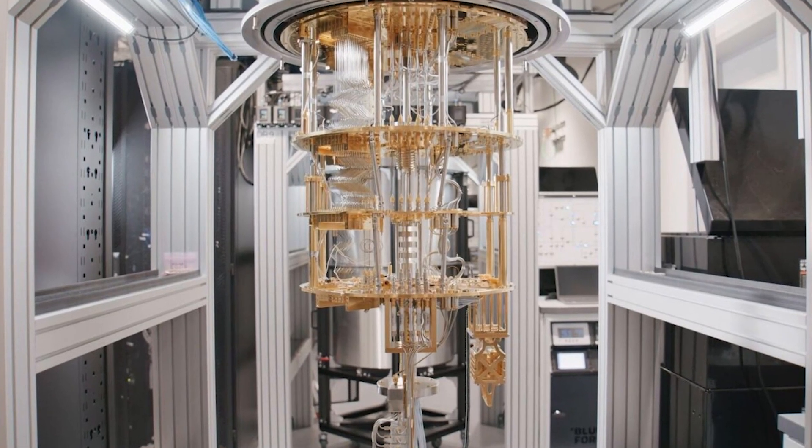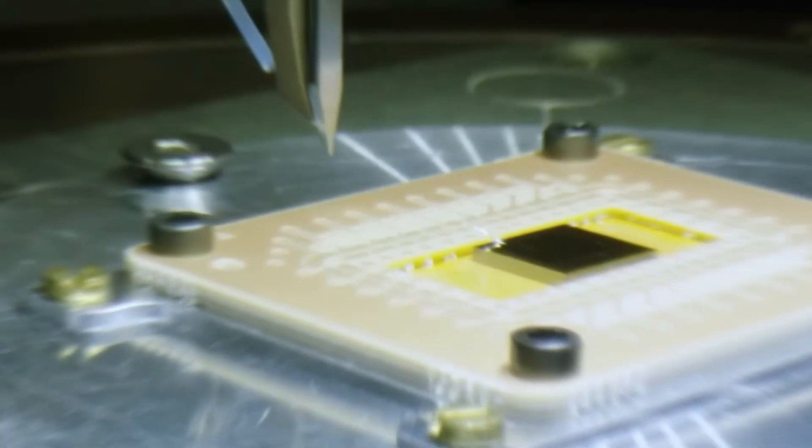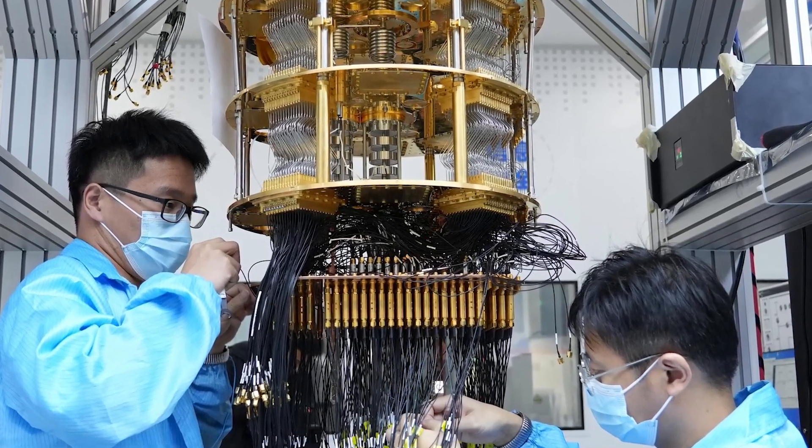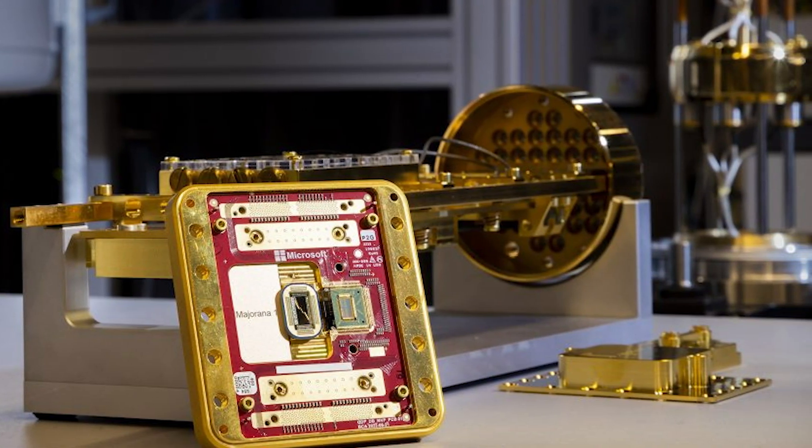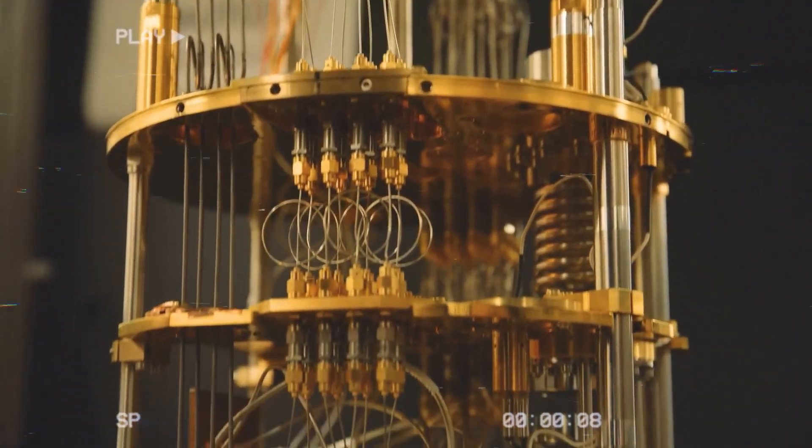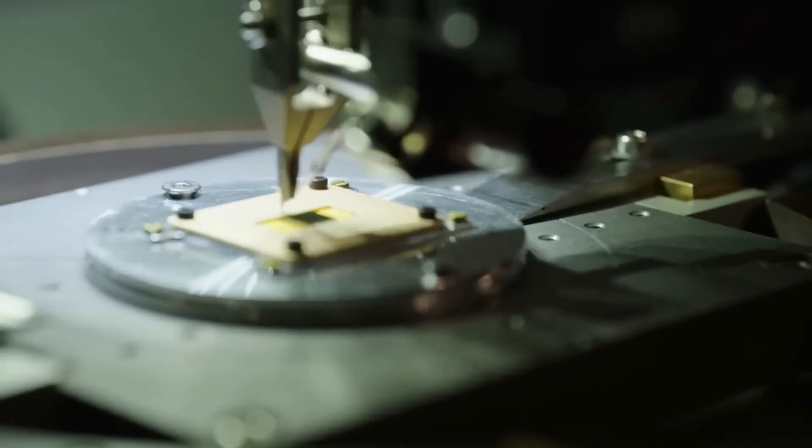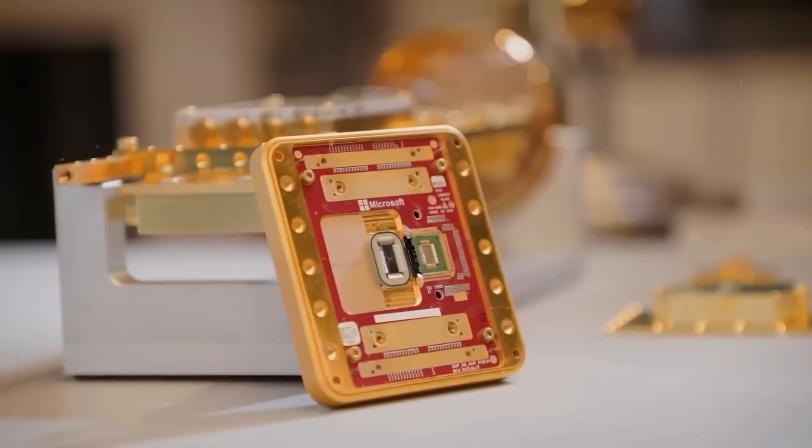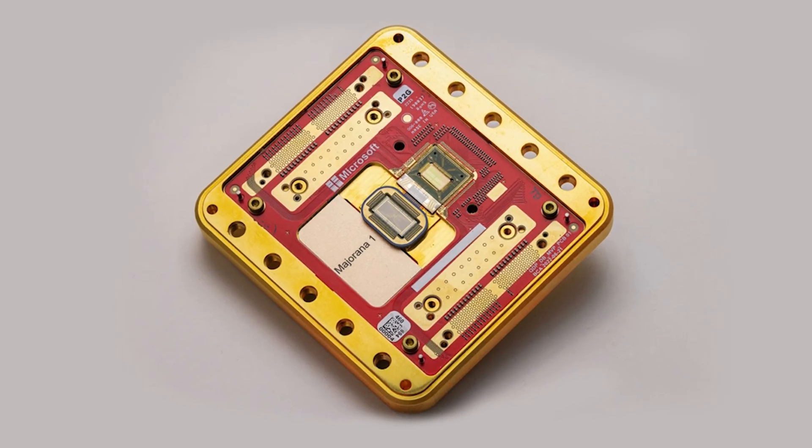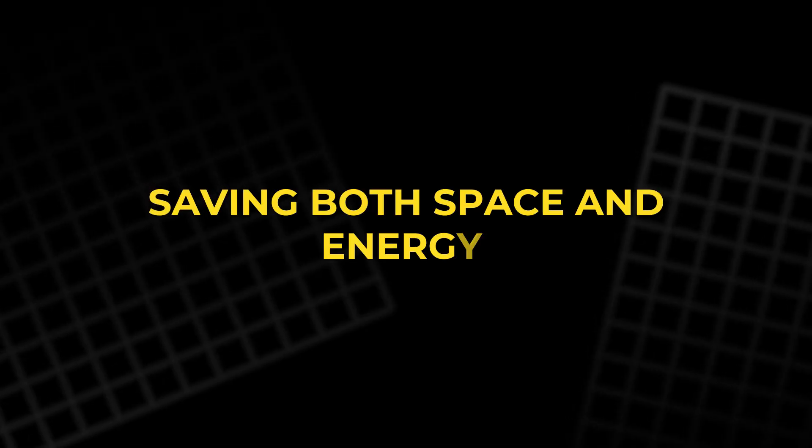Amazon's Ocelot represents a different philosophy: efficiency. Rather than betting on unproven physics, Amazon combines Transmons, a well-understood superconducting qubit design, with cat qubits inspired by Schrodinger's famous thought experiment. These cat qubits exist in two highly distinct states simultaneously, like a cat that is both alive and dead until observed. Because the states are so far apart, errors have a harder time flipping between them. The Ocelot prototype employs four transmons for stability and five cat qubits for data storage. This hybrid design drastically reduces the overhead usually required for error correction. Amazon estimates that its approach can cut correction costs by up to 90%. That means fewer qubits are needed to represent the same logical information, saving both space and energy.